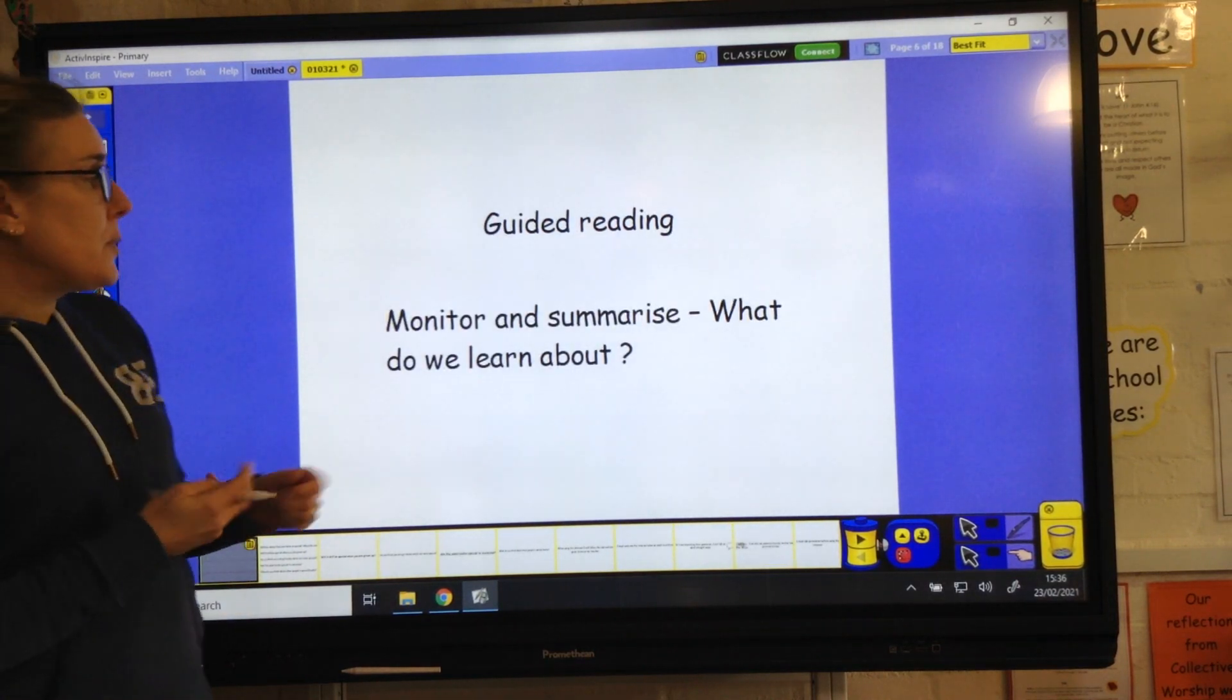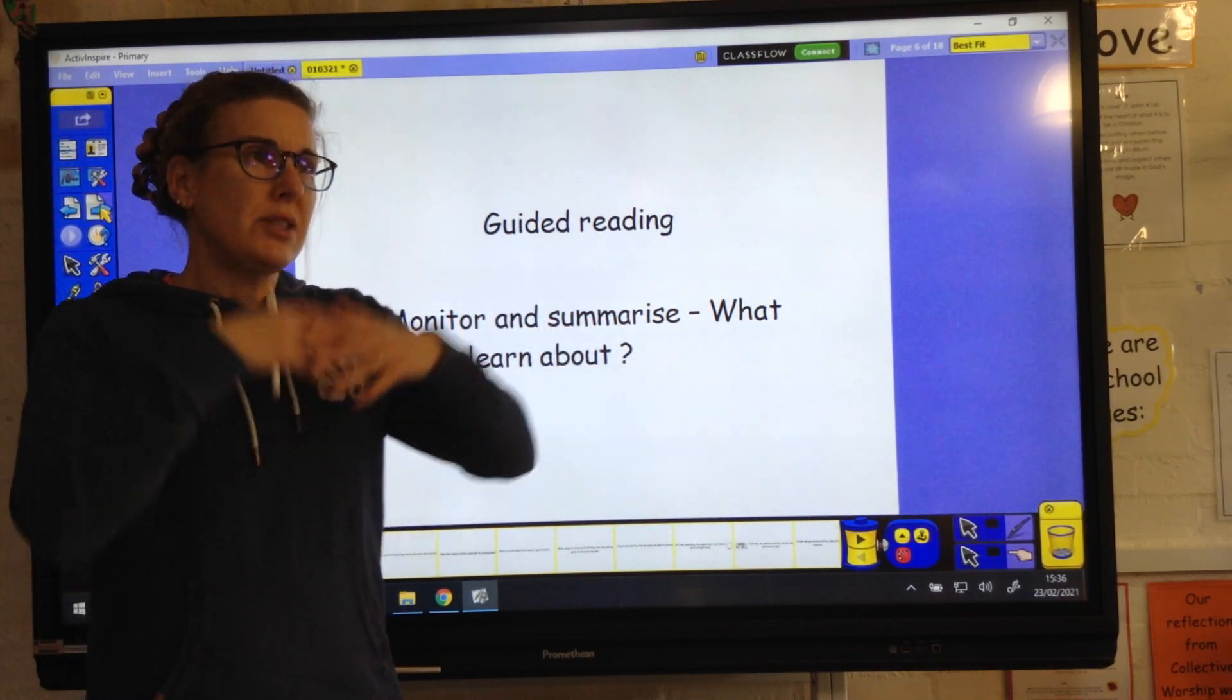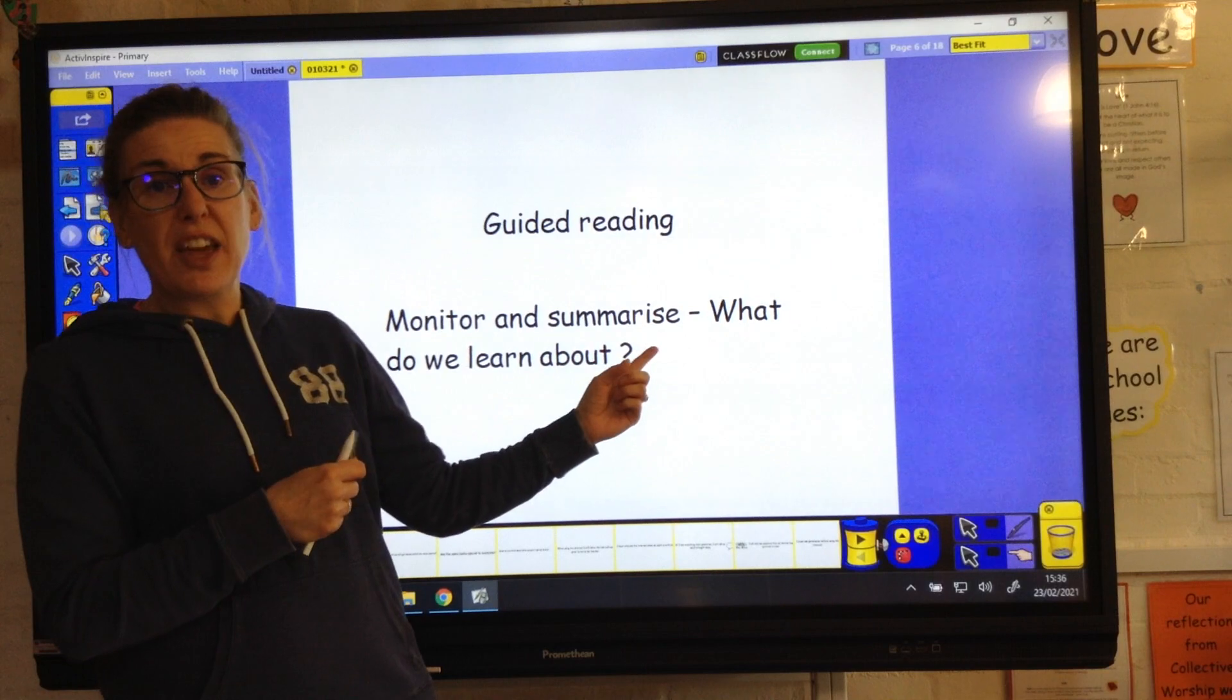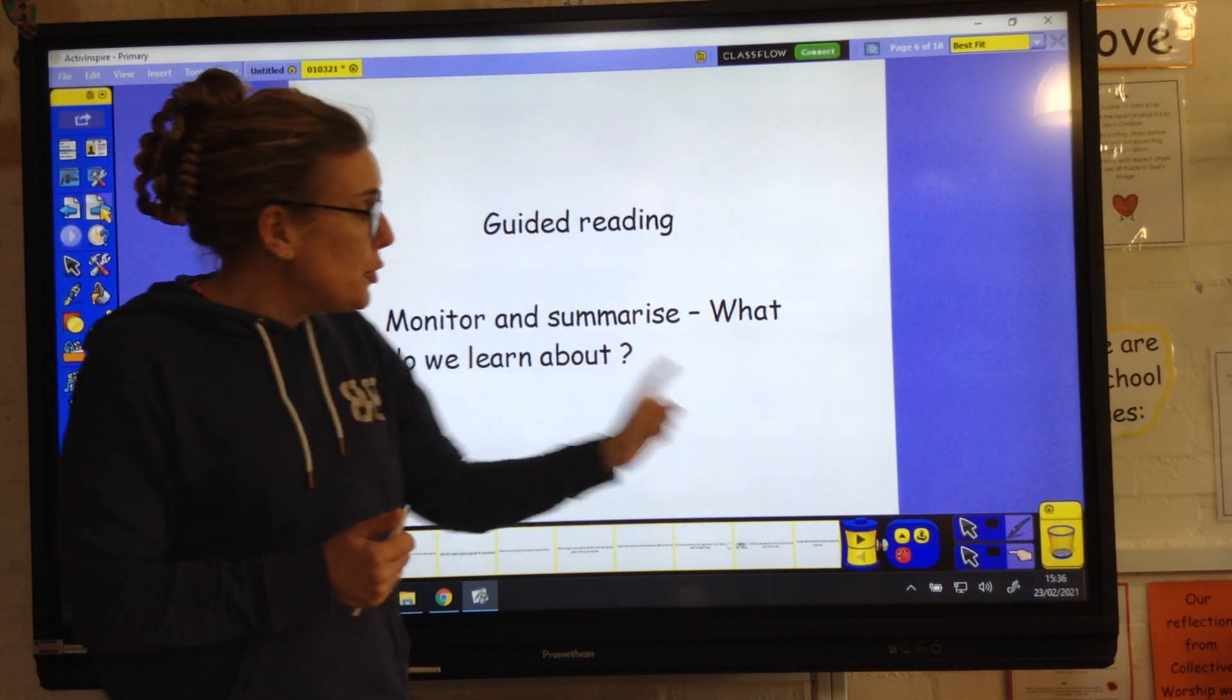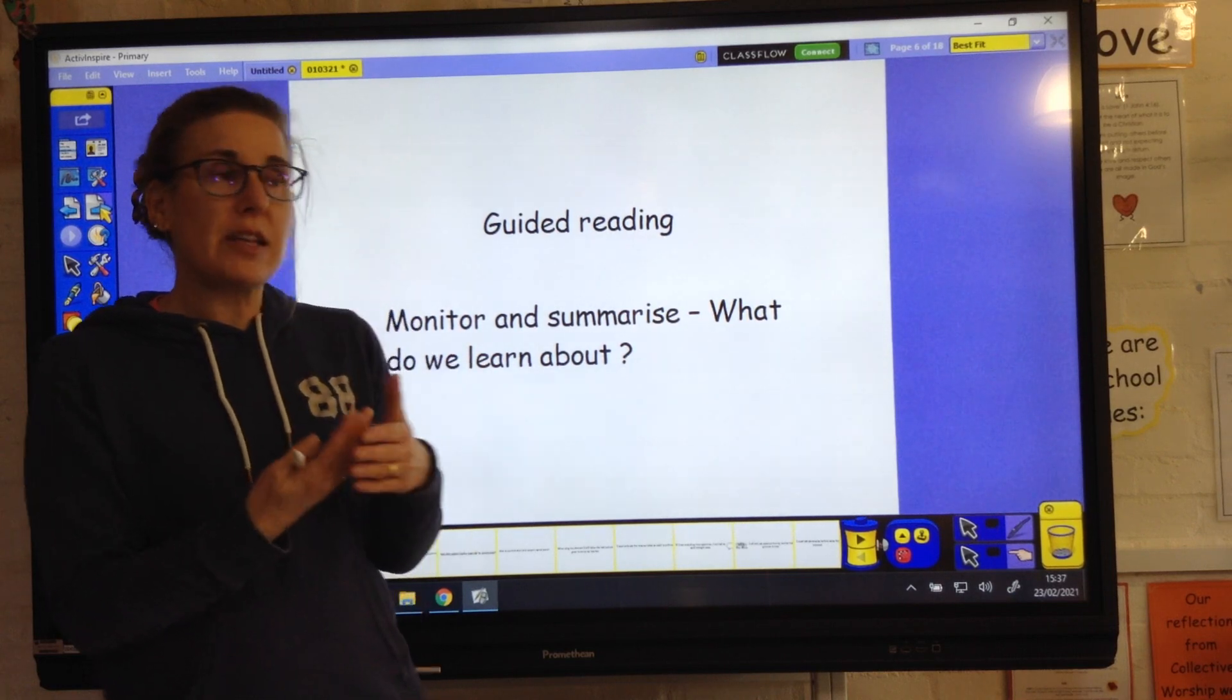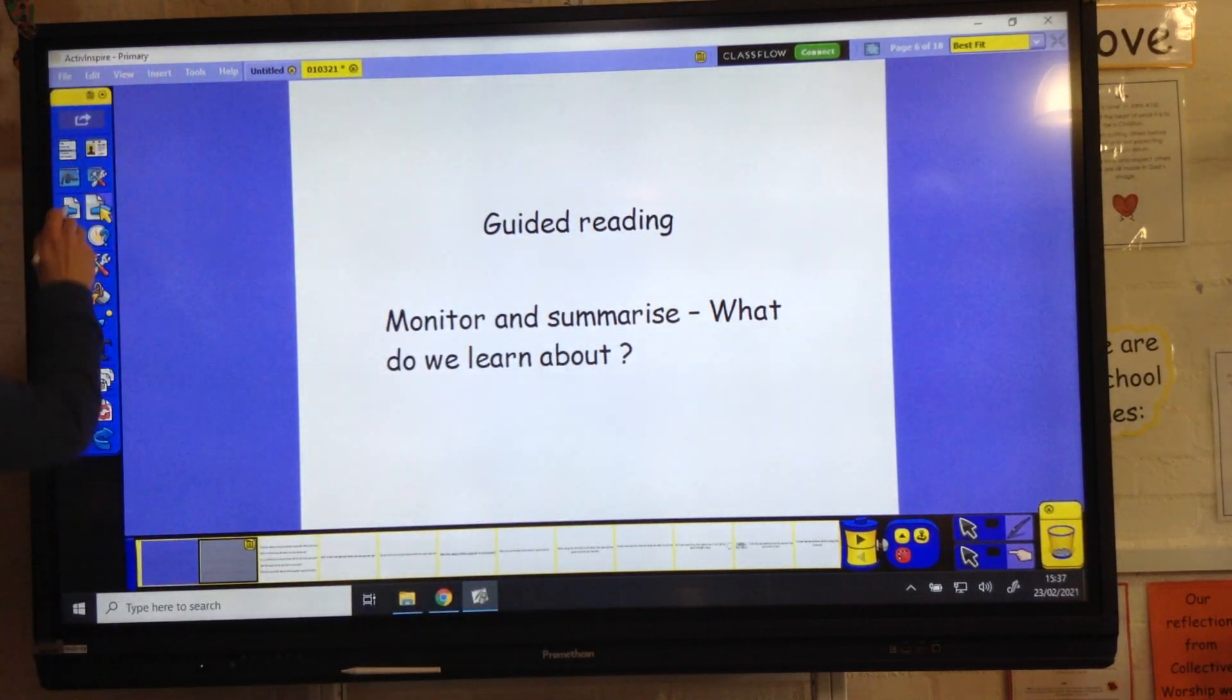Our guided reading this week, we're monitoring and summarising again. Our question is, what did we learn about? That's about a character or a setting or something. What did we learn about Sir Charlie Stinky Socks? You could put that at the end of the question or just have it as an open question. Think about what you've learned and try to answer that using evidence from this book that you've been reading.